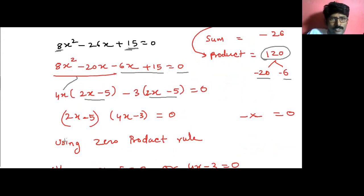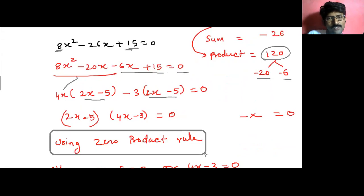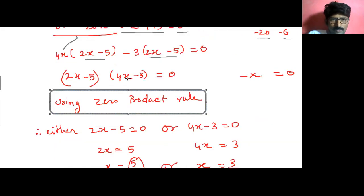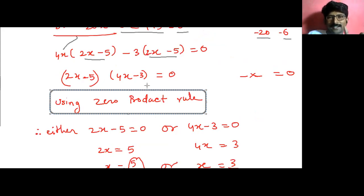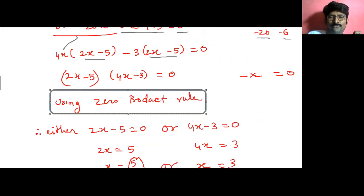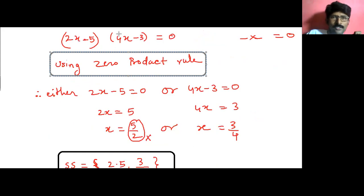Now I'm using the zero product rule. What is the zero product rule? When the product of two numbers is zero, either one of the numbers has to be zero. So when the product of these two factors equals zero, either 2x minus 5 equals 0 or 4x minus 3 equals 0. You understand why — because the product of the two numbers is zero, either one of them must be zero. So: 2x minus 5 equals 0 means 2x equals 5, meaning x equals 5 over 2.